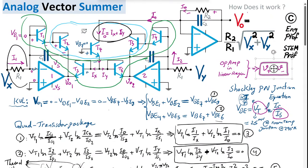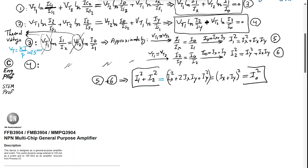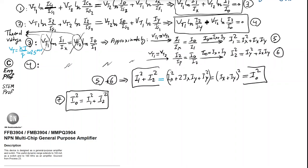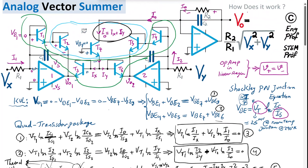I1 is defined by Vx and R1: with virtual ground enforcing zero volts at one side of R1, the voltage drop across R1 is Vx, so I1 = Vx/R1. Similarly I2 = Vy/R1. Substituting into equation 7: